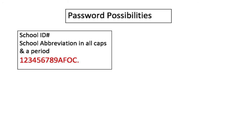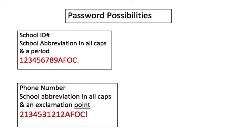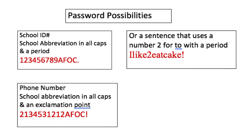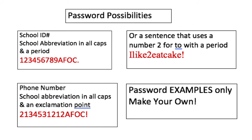Some password possibilities: you could use your school ID with your school abbreviation in all caps and a period at the end. You could use your phone number and your school abbreviation in all caps and an exclamation point at the end. Or you could do a sentence and put in the number 2 instead of 'to', like 'I like 2 eat cake!' — make sure you use a capital. These are examples only, go ahead and make your own.